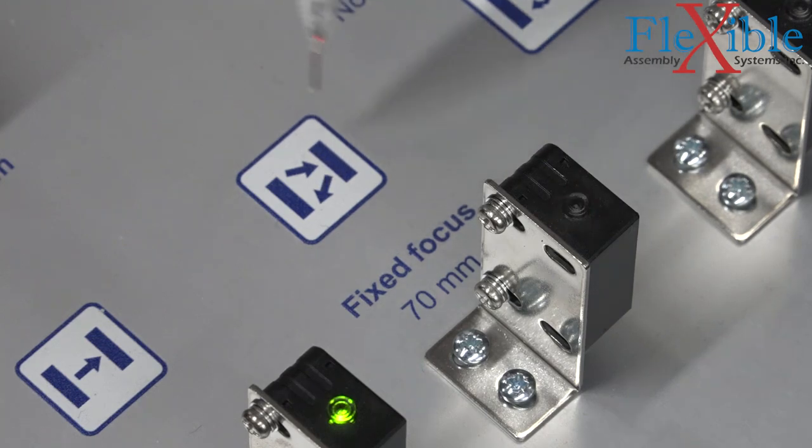Fixed focus and diffused proximity sensors may have short detection ranges, but their single housing design allows them to fit into tiny spaces where reflectors and receivers can't fit.